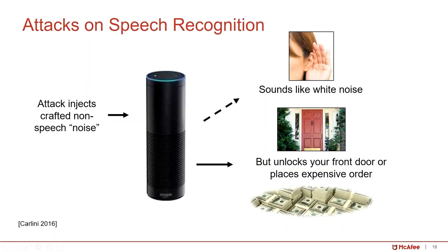Those examples showed that convolutional neural networks for image processing are vulnerable. This example from UC Berkeley works on speech recognition using a recurrent neural network. The attacker can inject crafted non-speech noise into a smart speech recognition system such as Alexa. It sounds to humans just like white noise, but the AI system will recognize it as a command to unlock your door or place an expensive order.